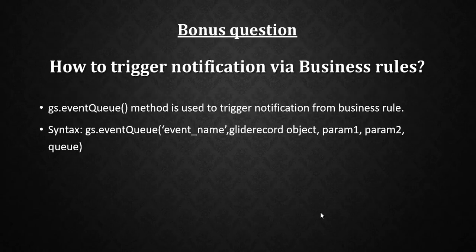This is a bonus question: how do you trigger a notification via a business rule? You use the gs.eventQueue method. If asked about its parameters, there are five: the first is the event name, the second is the GlideRecord object, the third and fourth are param1 and param2 (which can be any string, method, or variable), and the fifth is the queue name, which is optional. The same method is used if asked how to trigger an event from a business rule.